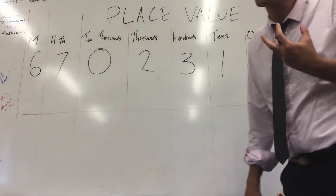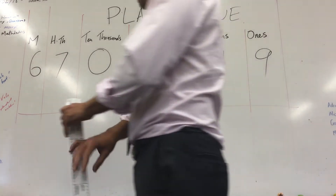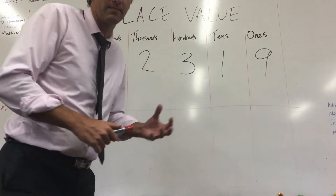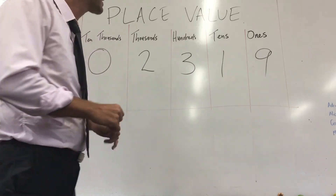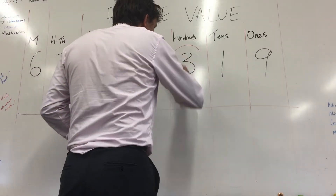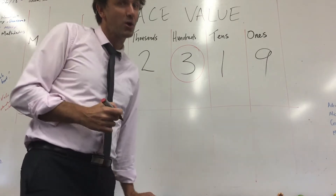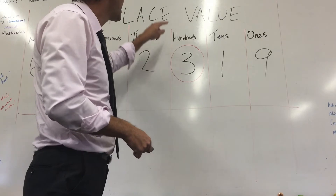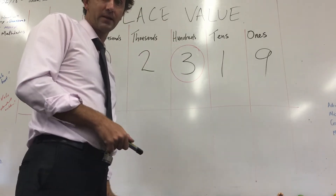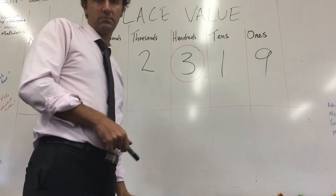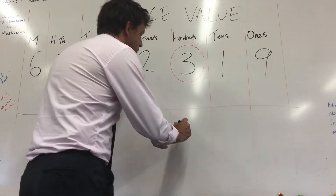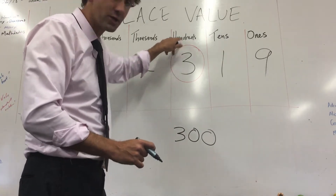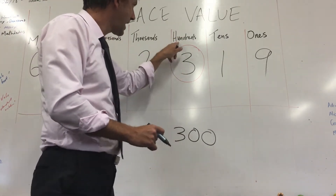This chart can actually help us to read numbers out loud. And more than that, any given number in this chart, we should be able to know the value of. For example, do you see this three? I've drawn a big red circle over it. That three, because it's in the hundreds column, is equal to three hundred.